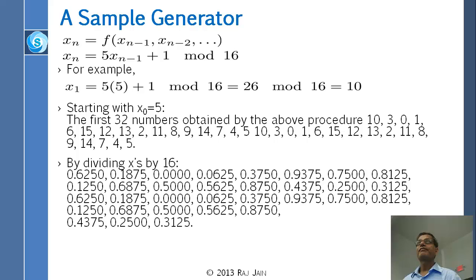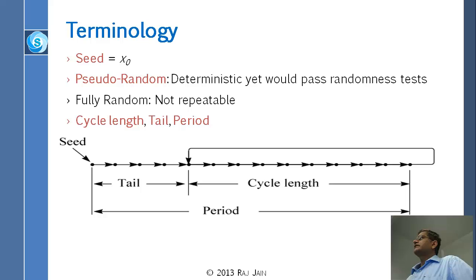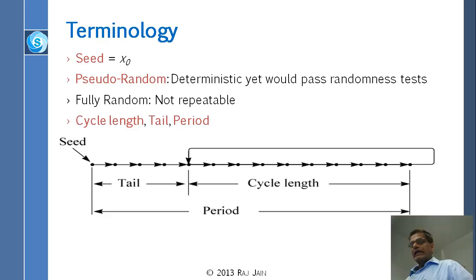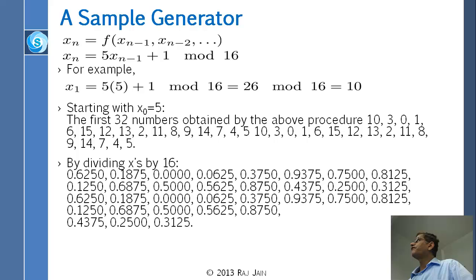There are tests for randomness, some simple ones we will do here. What we have learned from the previous example: the very first number you select is called the seed — you have to supply that number. In our case, we took the seed of 0.625 (which is 5/16). We gave it to the routine, the routine gave us 0.1875, and then it continues by itself.